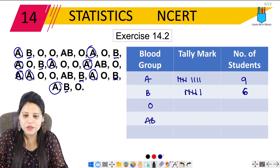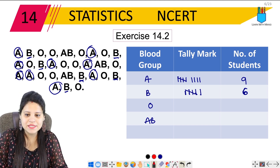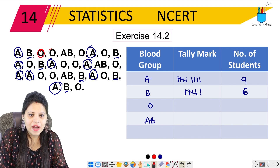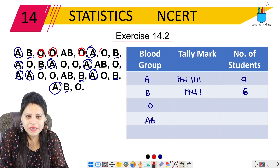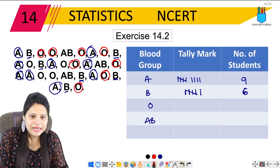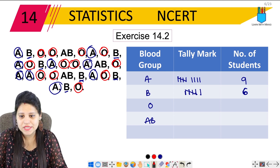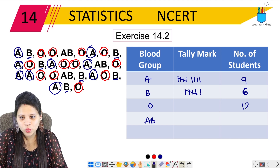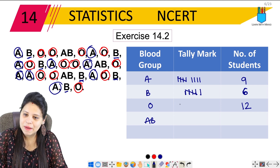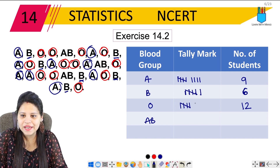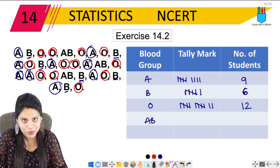Next, how many have blood group O? Let's change the color. Counting: 1, 2, 3, 4, 5, 6, 7, 8, 9, 10, 11, 12 — so 12 students have blood group O. We write 12 here, and the tally marks: 1, 2, 3, 4, 5, 6, 7, 8, 9, 10, 11, 12.